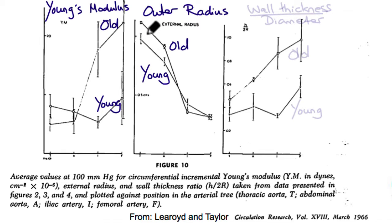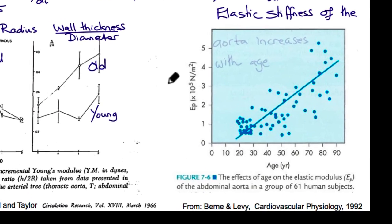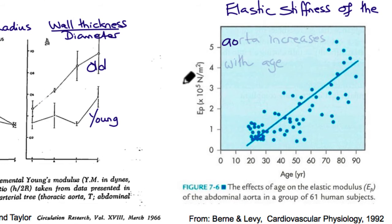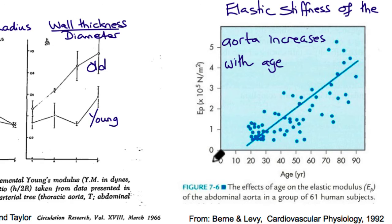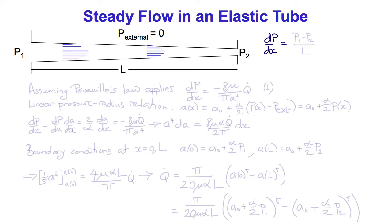Here's the outer radius, and you can see that the radius decreases as you'd expect and is a little lower in the younger subjects. Here's the wall thickness to diameter ratio, which not only increases as you get towards the arterioles but is larger in older subjects. Here's data as a function of age in humans, and you can see that the elastic modulus of the abdominal aorta increases 4 to 5 fold over about 7 decades. So how does the elasticity of the vessels affect the blood flow?